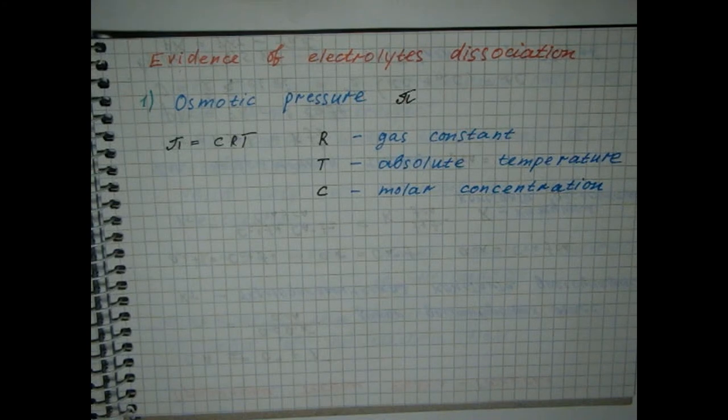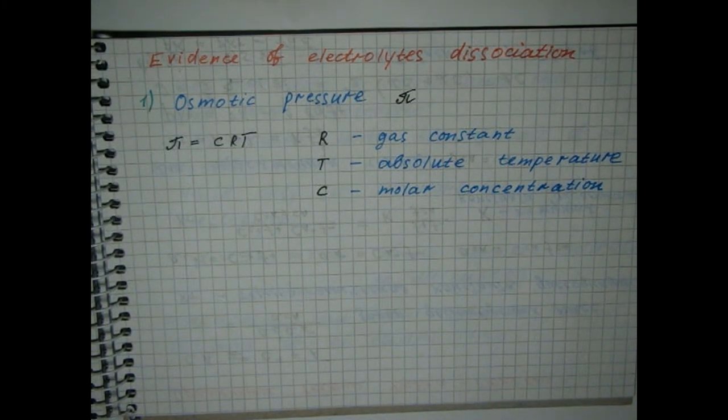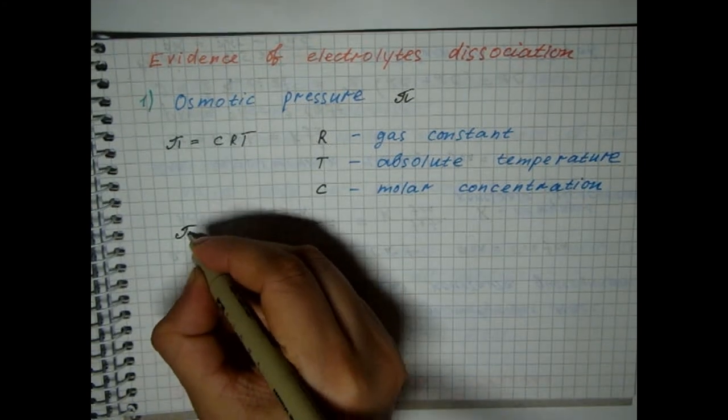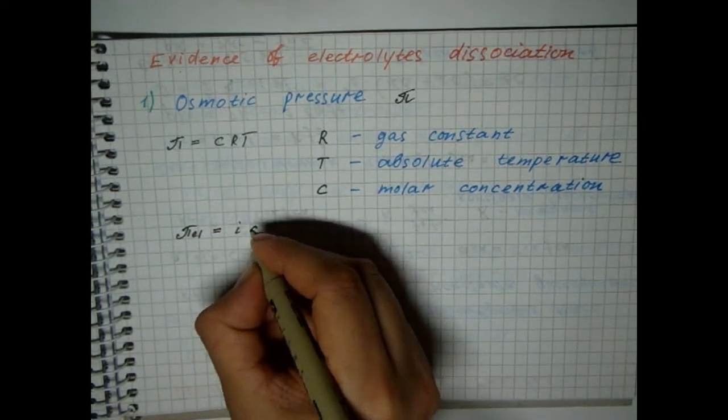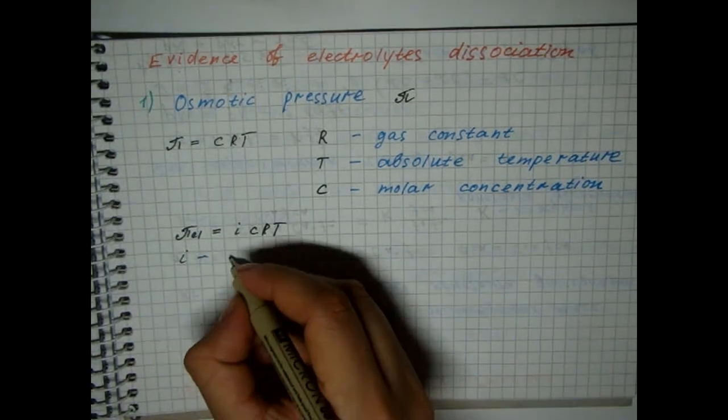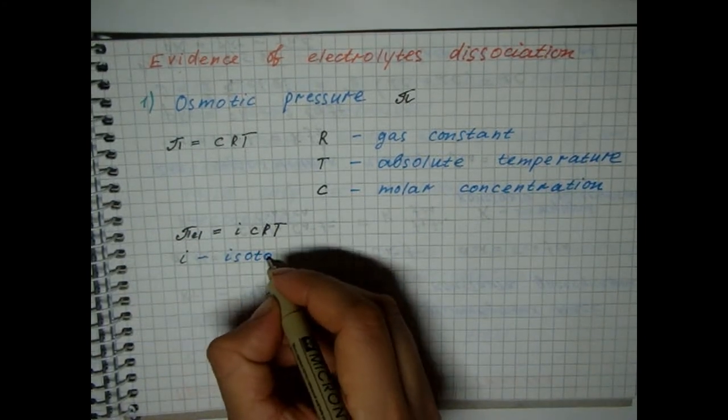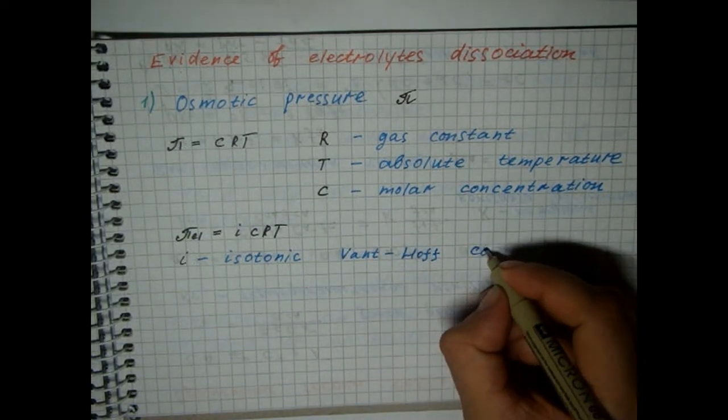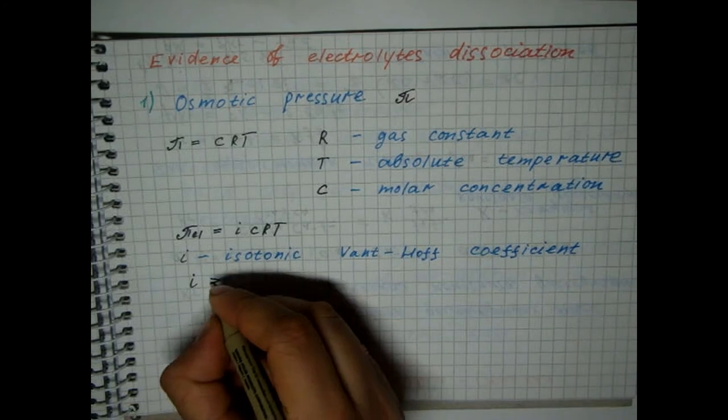To explain this, the isotonic van 't Hoff coefficient was added and the ratio for osmotic pressure in electrolyte solution was written. A comparison of the two formulas suggested that the total number of particles in electrolyte solutions is greater than in a non-electrolyte solution of the same molar concentration.